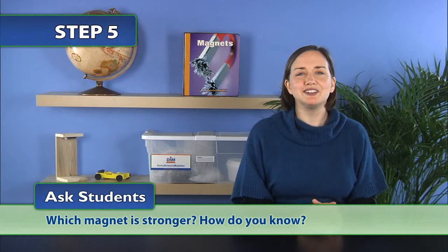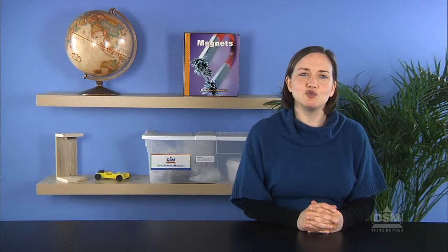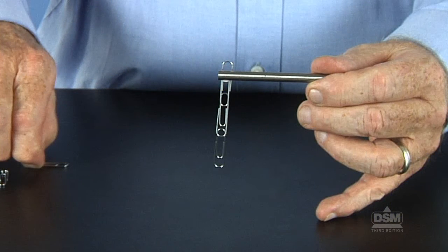Then, when they have calculated the average number of paperclips held by each end of each magnet, ask students which magnet is stronger. How do you know? Students should say that the rod magnet is stronger because it can lift more paperclips.